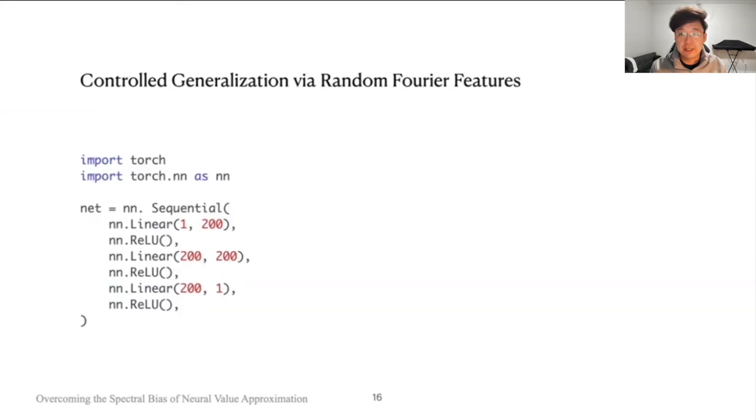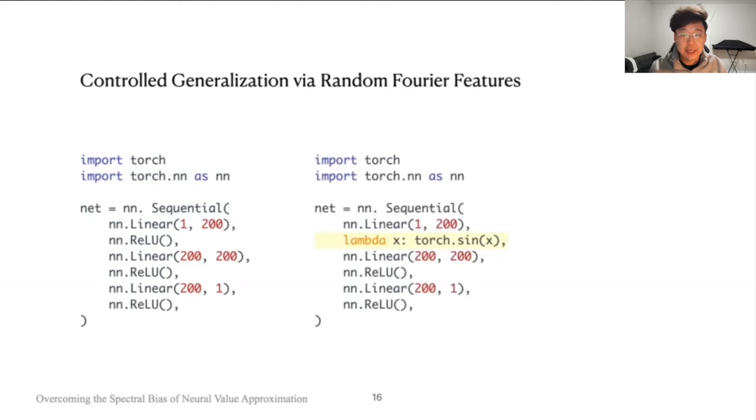This composite function approximator, the Fourier feature network, can be implemented on top of an existing multilayer perceptron network by making a single line change: by simply replacing the ReLU activation of the first layer with a sine nonlinearity.